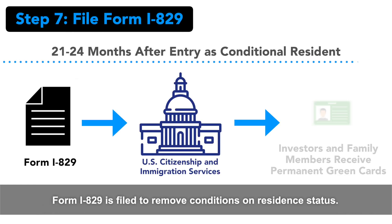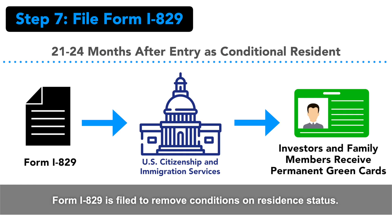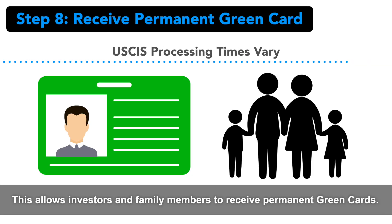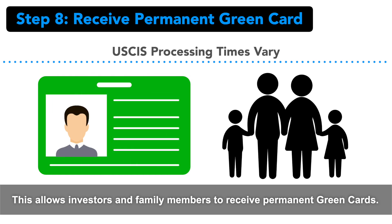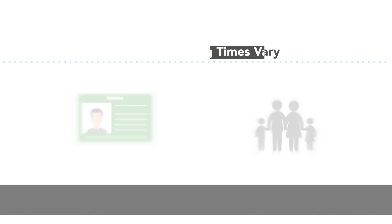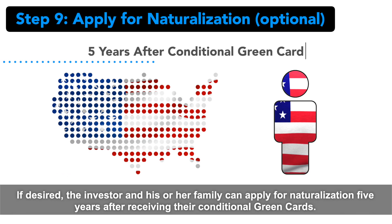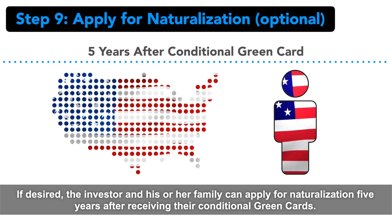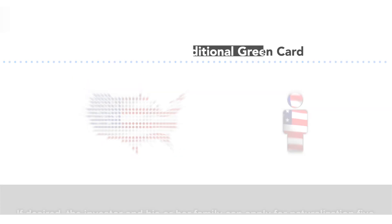Form I-829 is filed to remove conditions on resident status, allowing investors and family members to receive permanent green cards. If desired, the investor and his or her family can apply for naturalization five years after receiving their conditional green cards.